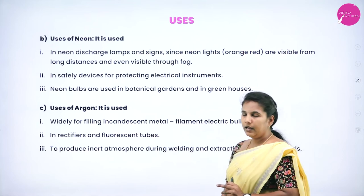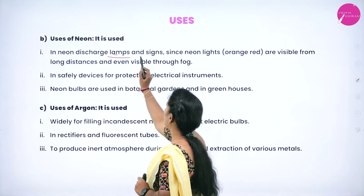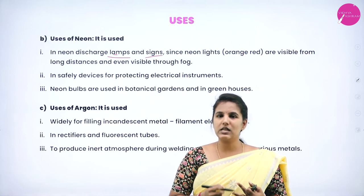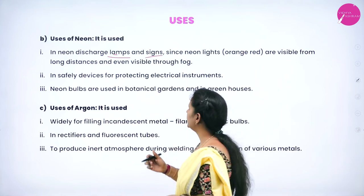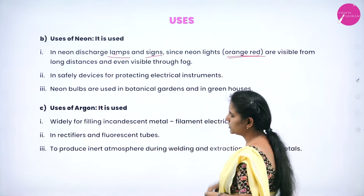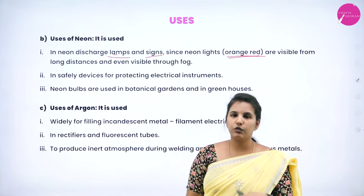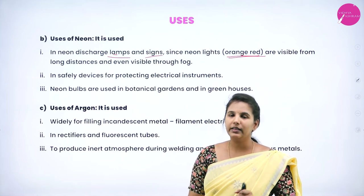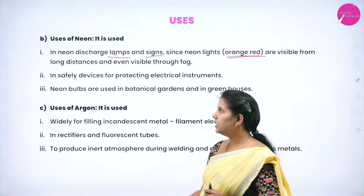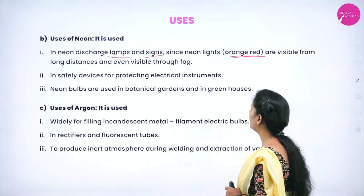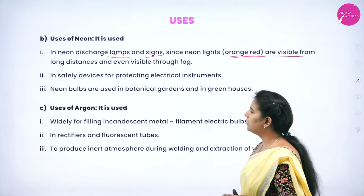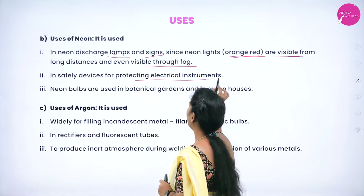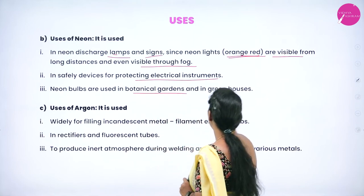Neon is used to fill discharge lamps and in signs. It forms an orange-red color that is visible to drivers from long distances and even visible through fog, making it useful for road signs and distance markers. It is also used in safety devices for protecting electrical instruments, and neon bulbs are used in botanical gardens and greenhouses.